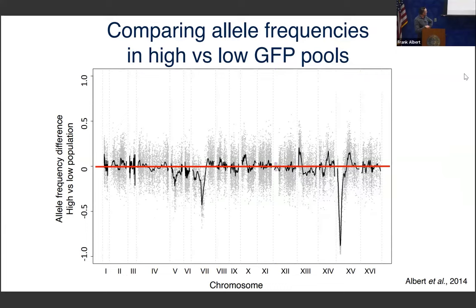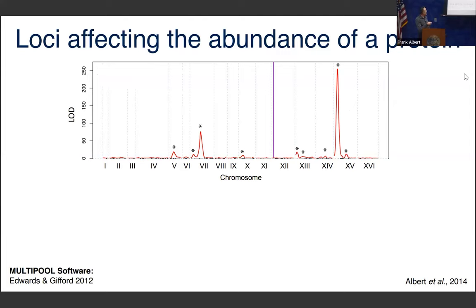Here's the yeast genome with its chromosomes, and we're looking at the difference in allele frequency of the lab versus wine allele in the high versus low population. On average there's no difference between these populations, but there are sites — deflections — where the wine allele was greatly enriched in the high GFP population, suggesting some DNA variation there pushes cells into that population. These are the kinds of things we're after. We formally identify these peaks by converting them into conventional measures of significance.